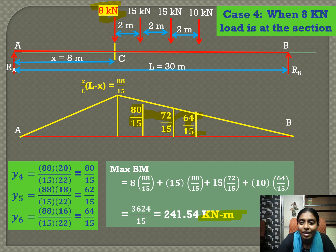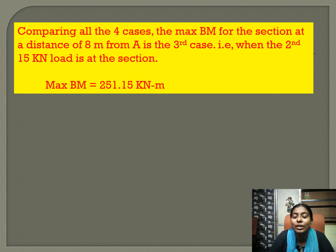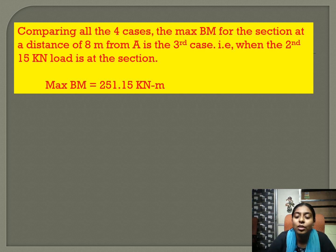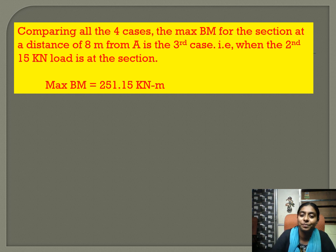Comparing all four cases, the maximum bending moment for the section at a distance of 8 meters from A occurs in Case 3, when the second 15 kN load is at the section. The maximum bending moment is 251.15 kN·m. So that is all we were asked to find: maximum negative shear force, maximum positive shear force, and maximum bending moment. Thank you.